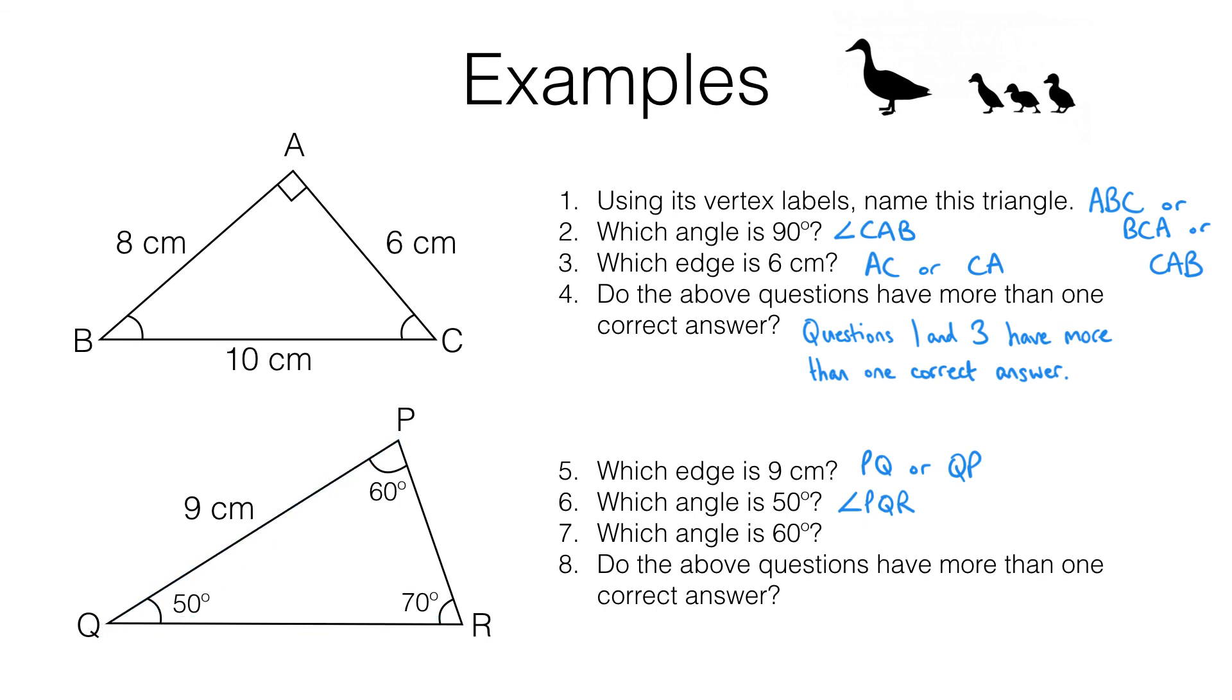For question seven, we're looking at the 60 degree angle, that's this one here. It's between this side here and this side here. Going round in an anti-clockwise direction, you'll see we're going to start by calling this RPQ. Don't forget the angle symbol, there it is, angle RPQ. That's the 60 degree angle in the shape.